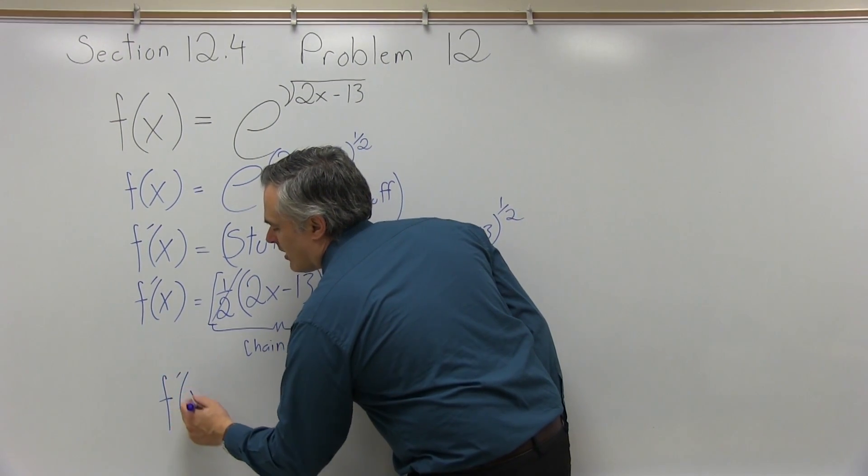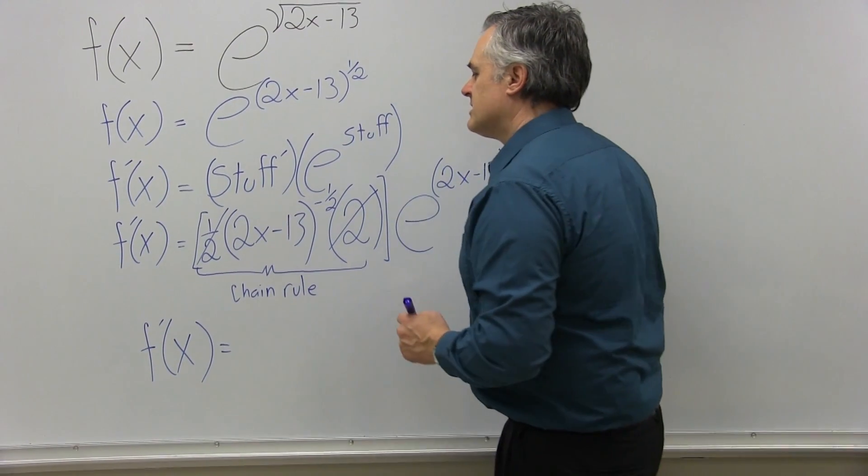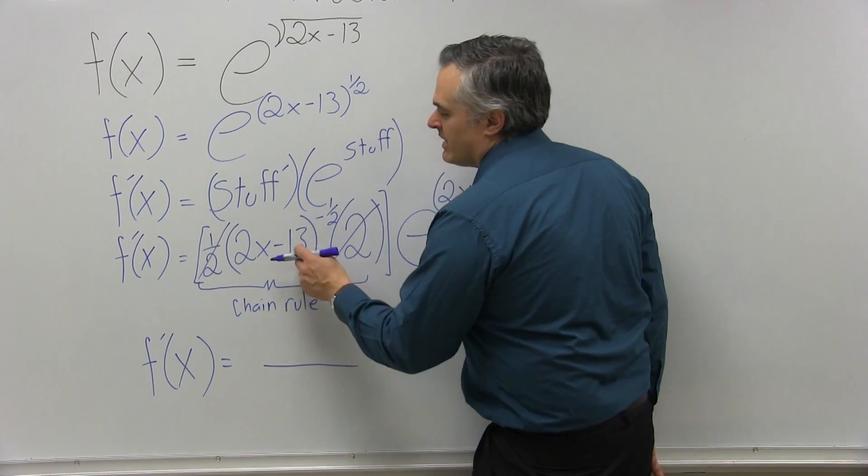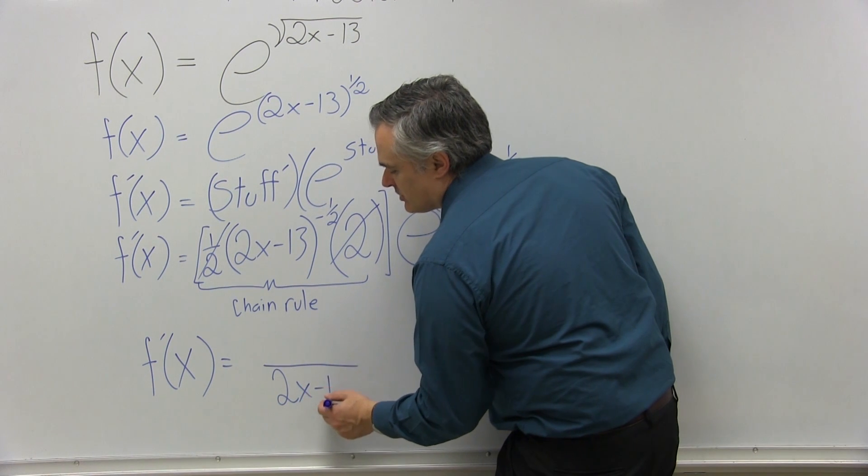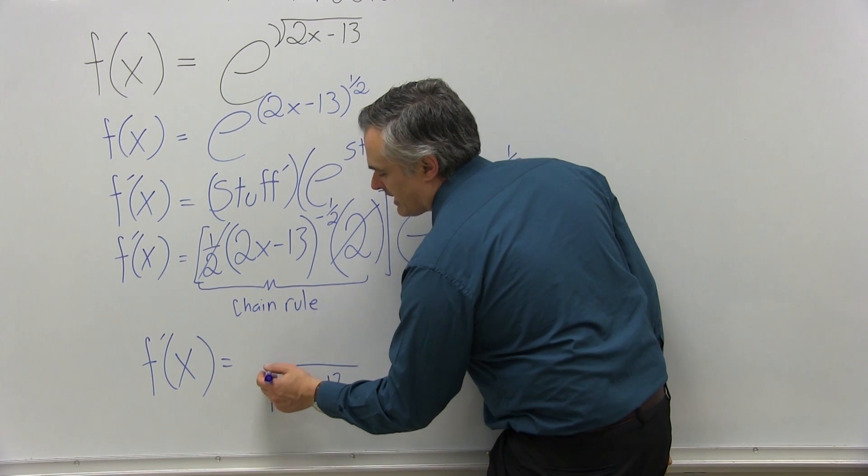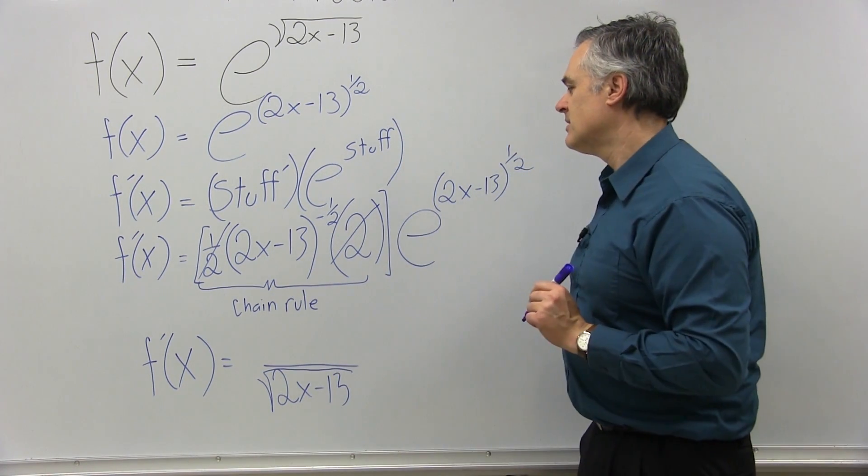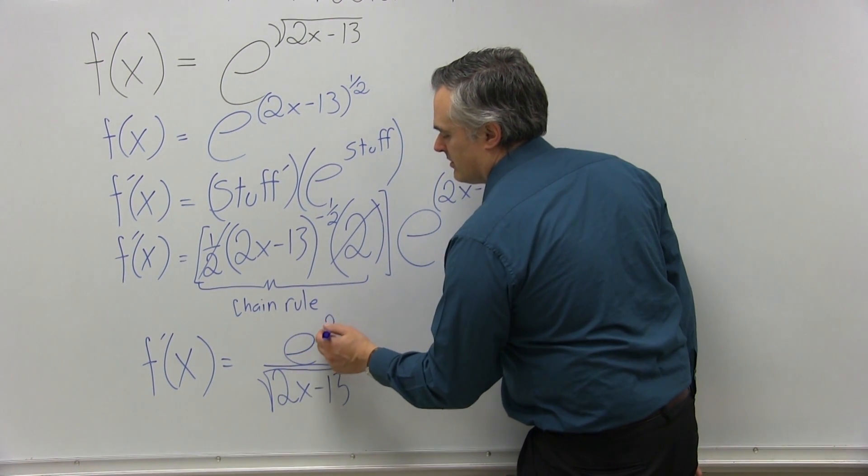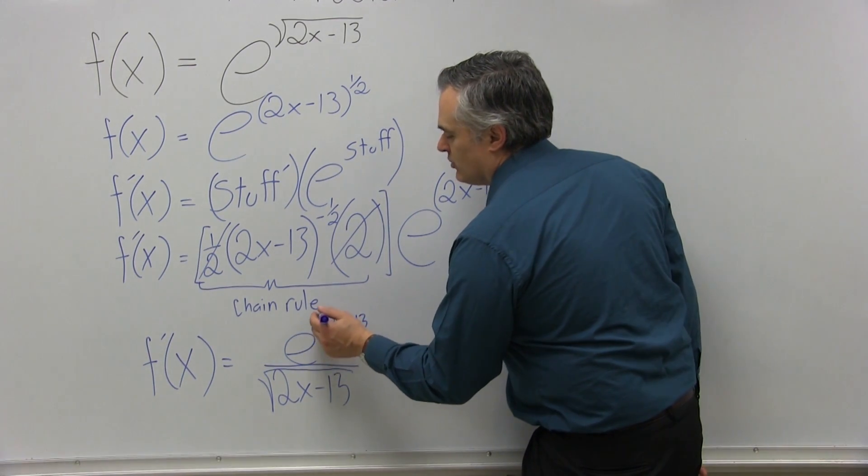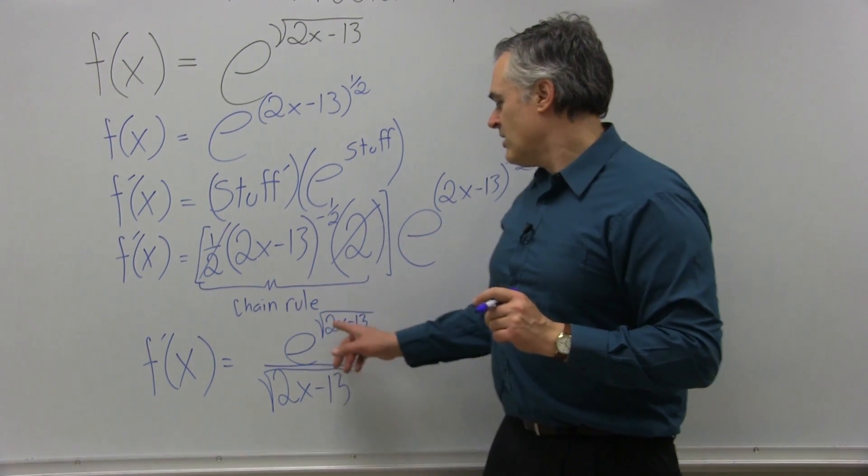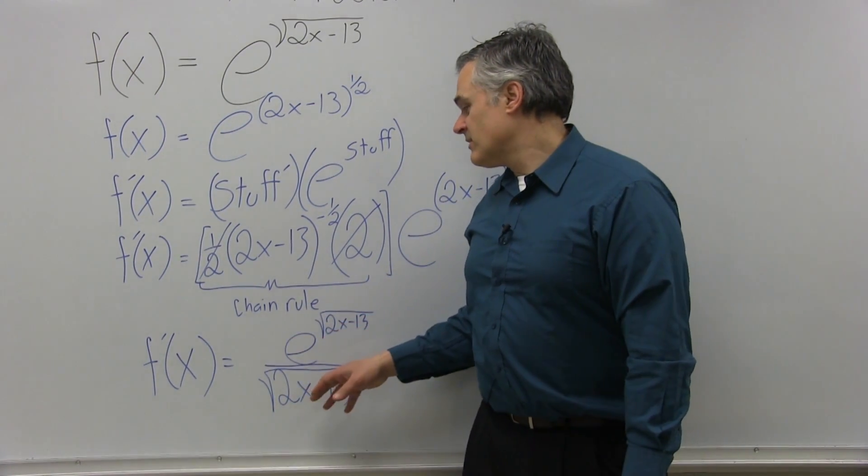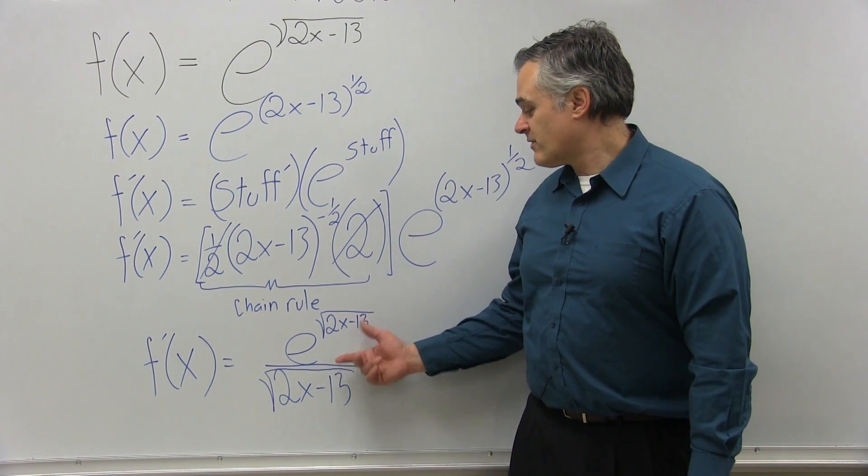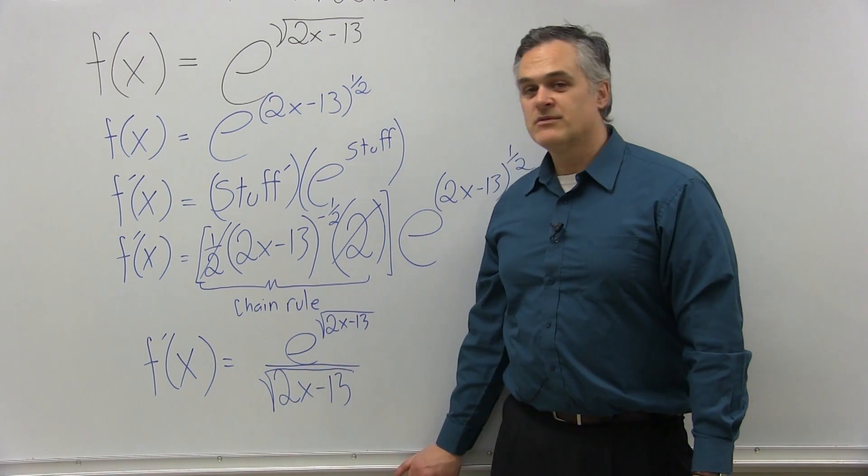So we'll say f prime of x equals, well, the 2x minus 13 to the negative 1 half power. Because it's negative, it's really in the denominator, 2x minus 13 to the positive 1 half. Or instead of positive 1 half power, I can make it a square root. And then the e to the 2x minus 13 to the 1 half is in the numerator. E to the 2x minus 13. And again, you could put it in parentheses and raise it to an exponent of 1 half. Or you could put it back to a square root format. So in its simplified form, f prime of x equals e to the square root of 2x minus 13 power in the numerator of a fraction and in the denominator, square root of 2x minus 13.